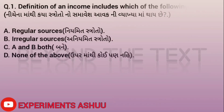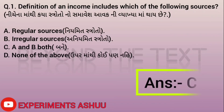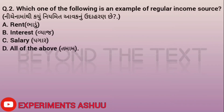The first question is: Definition of income includes which of the following sources? Options: A - regular sources, B - irregular sources, C - A and B both, D - none of the above. As we all know, the definition of income includes both regular and irregular sources, so our answer is C, that is A and B both.